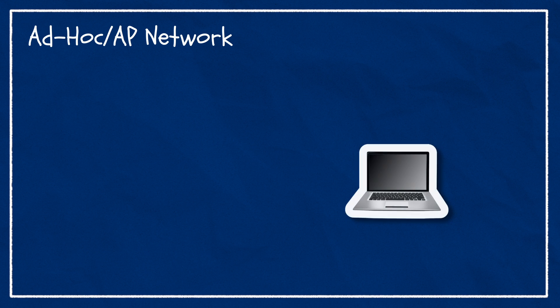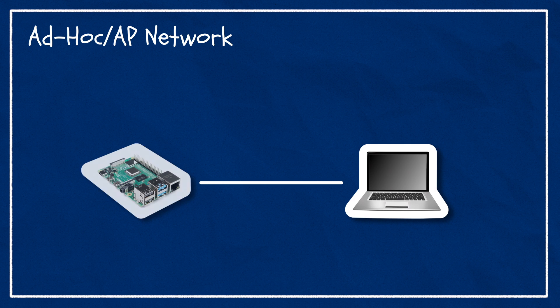If you think any of these might affect you, you might want to consider option number two: the ad hoc or access point network. This is where we set up one of the devices — the base station — to broadcast its own Wi-Fi network and have any other devices connect to it.